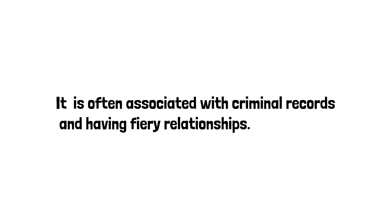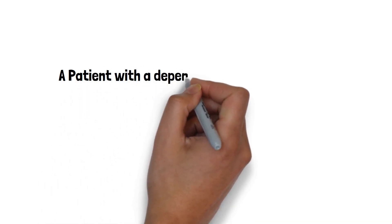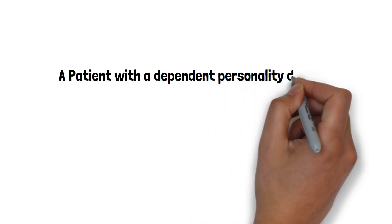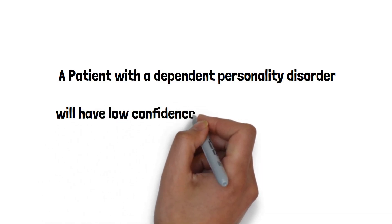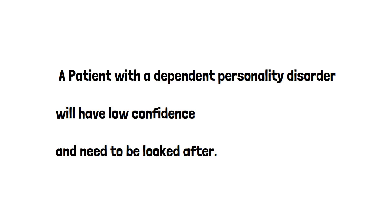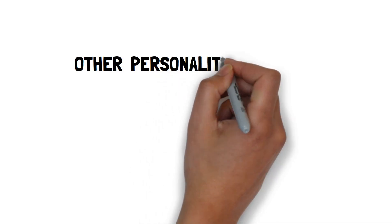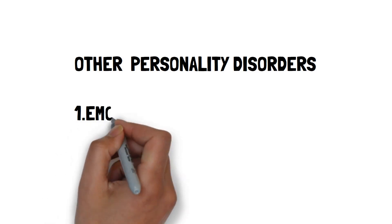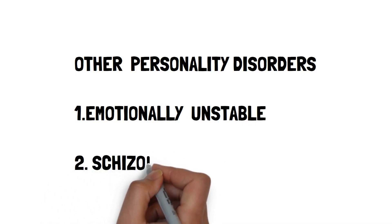So the other options included in this question: A patient with a dependent personality disorder will have very low confidence and need to be looked after. An emotionally unstable patient will be very impulsive and will have fears of abandonment and sudden outbursts. Patients who are emotionally unstable may self-harm or attempt suicide. A paranoid personality is characterized by distrust towards family and friends. And a schizoid personality is associated with a detachment towards real life. These patients appear indifferent towards other people and often have a very low libido.